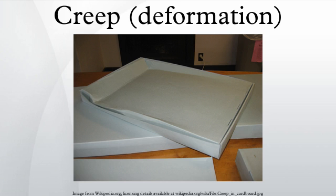Stages of creep: In the initial stage, or primary creep, the strain rate is relatively high, but slows with increasing time. This is due to work hardening. The strain rate eventually reaches a minimum and becomes near constant. This is due to the balance between work hardening and annealing. This stage is known as secondary or steady-state creep. This stage is the most understood, and the characterized creep strain rate typically refers to the rate in this secondary stage.